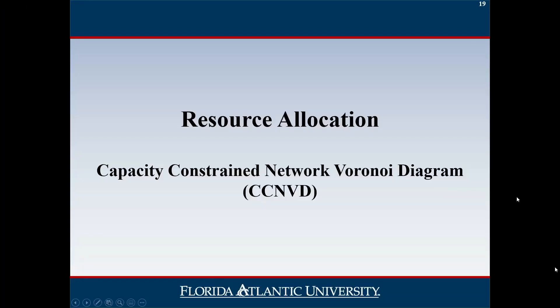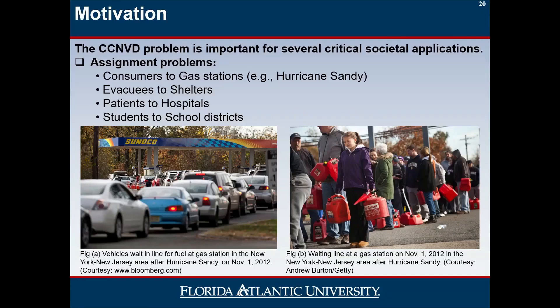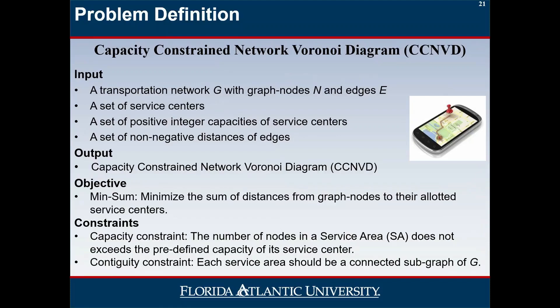The second query is resource allocation, which is important during evacuation. A common challenge is the gas shortage issue — every service center has limited resources and people must wait to obtain them. The question is: how do we minimize waiting time to obtain vital resources? Given a transportation network and a set of service centers such as gas stations, the output is a service area for each with limited resources, represented using a capacity-constrained network Voronoi diagram. The objective is to minimize travel time to reach the service center.